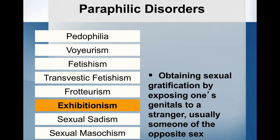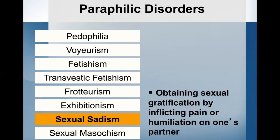Exhibitionism — here we're looking for six months where they have recurrent and intense sexual arousal from exposing their genitals to someone not suspecting that they were going to do so. They've either acted on this with a non-consenting person, or their urges and fantasies are causing them distress and impairment. These individuals typically do not attempt any other type of sexual contact. They are aroused by and enjoy the expression of shock and horror on the face of their victims — this is the classic flasher. We specify whether they were sexually aroused by exposing their genitals to children or to physically mature individuals. Based on exhibitionistic sexual acts in non-clinical populations, the highest prevalence in the male population is probably two to four percent, with much lower rates in women.